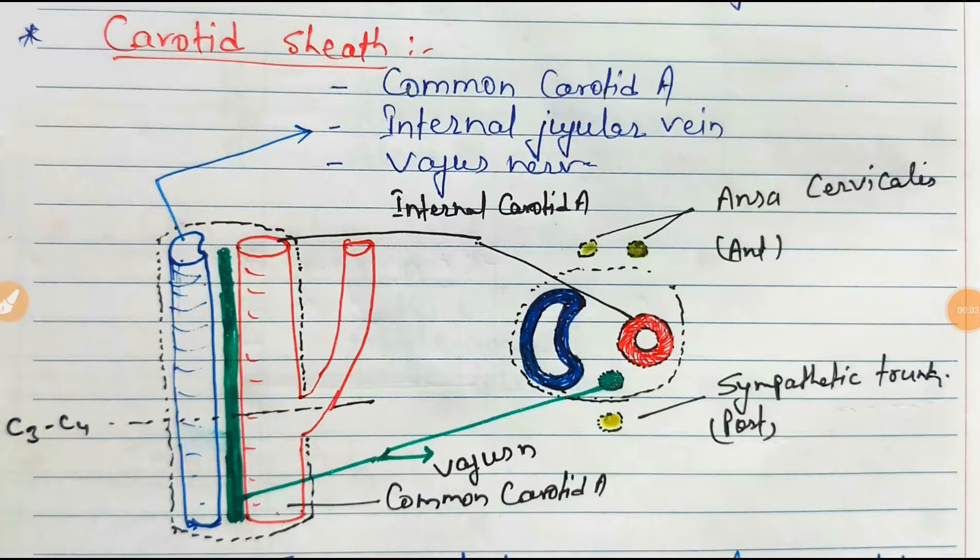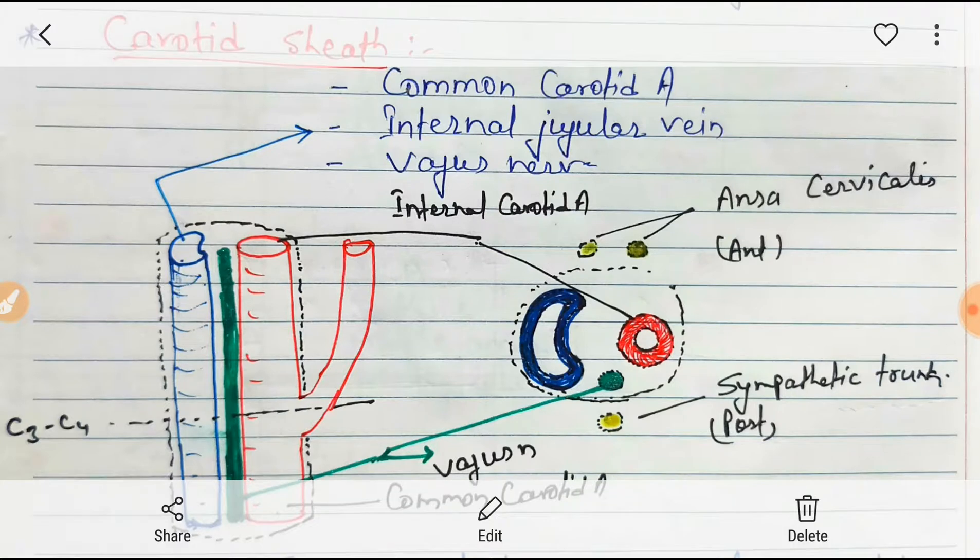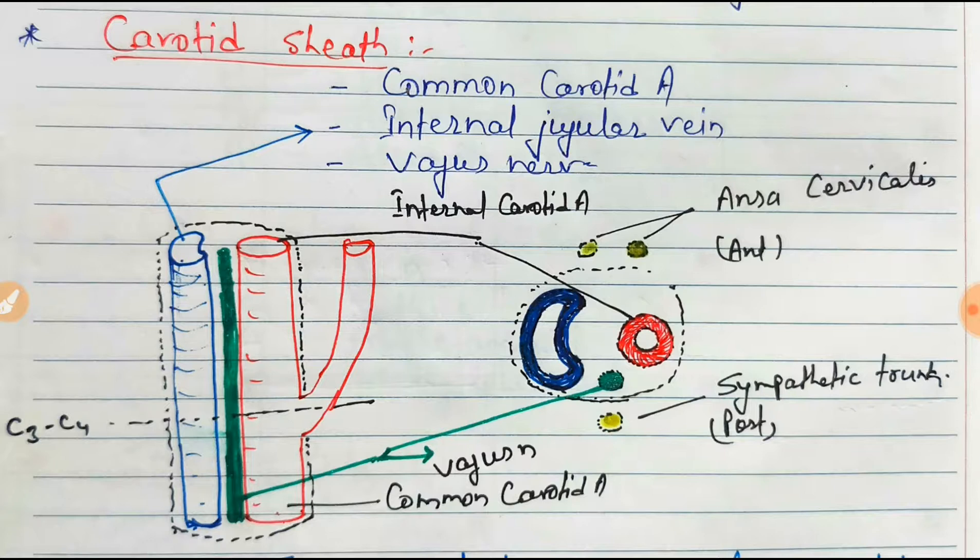It is actually located at the lateral boundary of retropharyngeal space at the level of oropharynx, which is deep to sternocleidomastoid muscles. And it extends from the base of skull to the first rib and sternum. That means the upper border is base of skull and lowermost is the first rib.